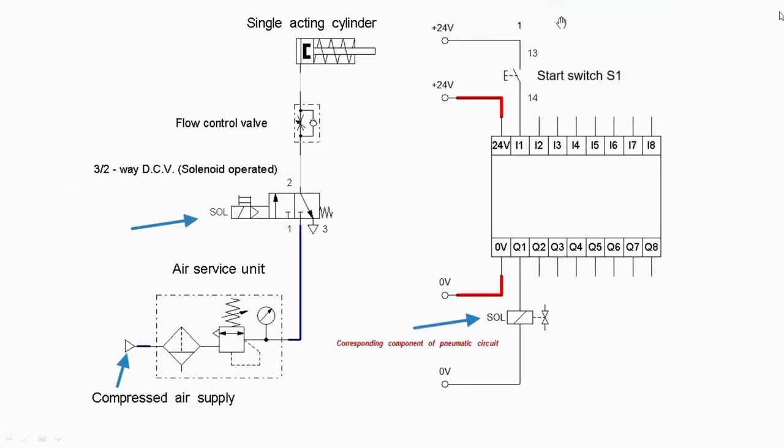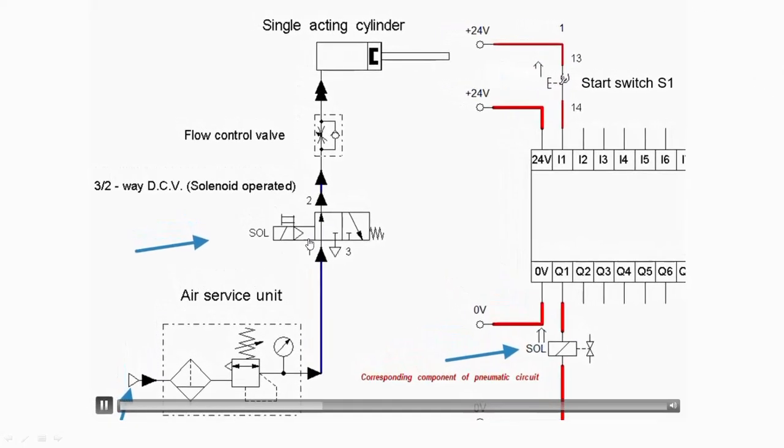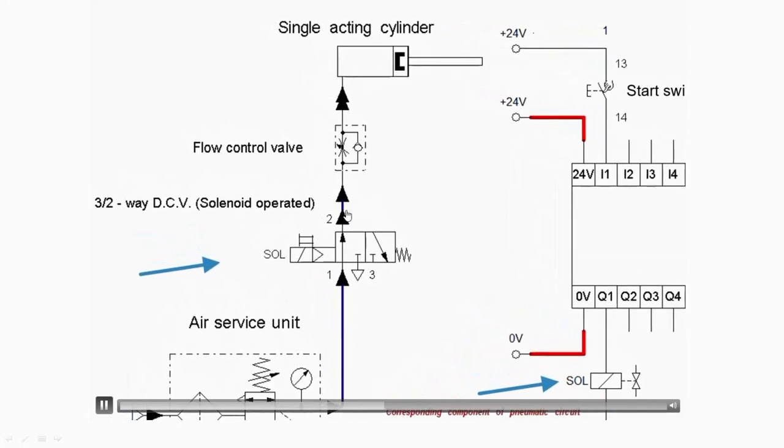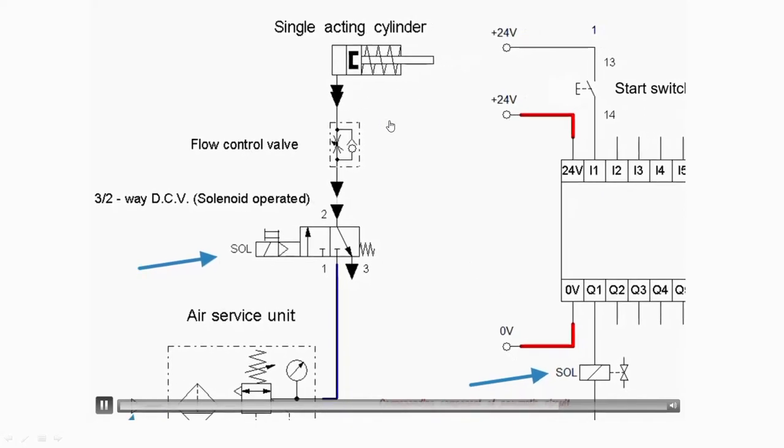So this is the start switch. When you press the start switch will get the left envelope mode and the forward stroke starts. And when you release the start switch then the retraction of the piston, that is the return stroke, starts.